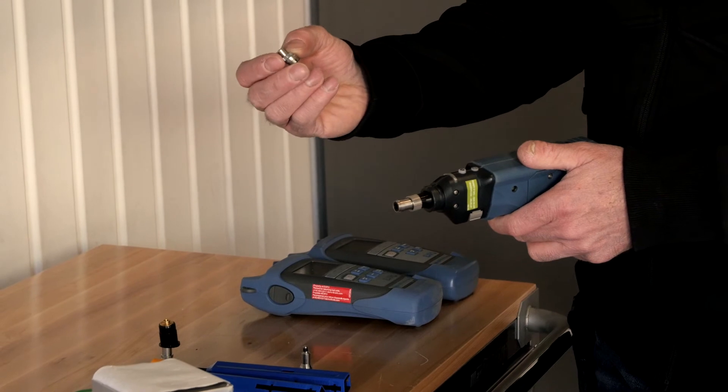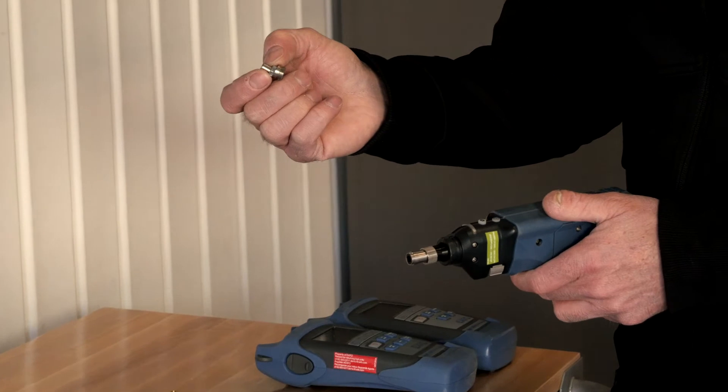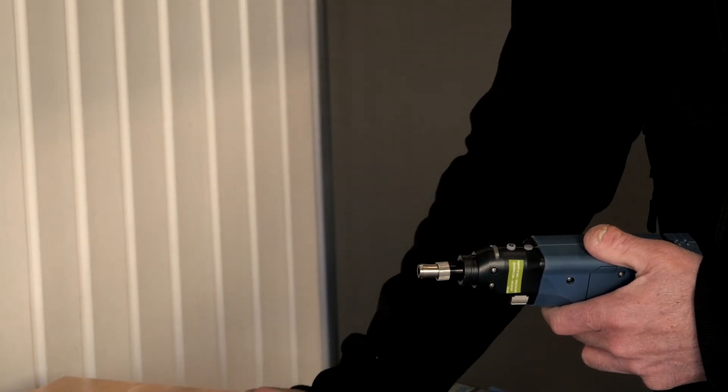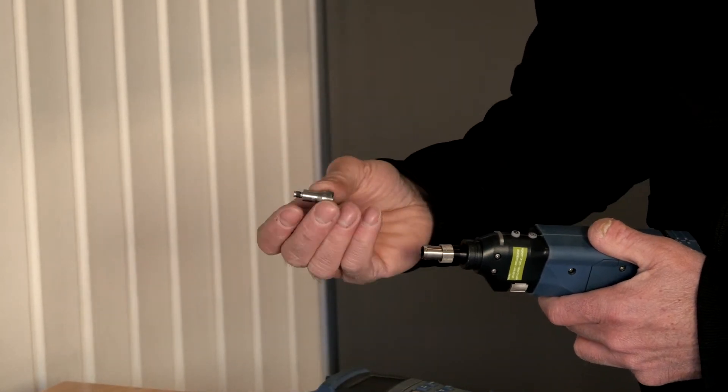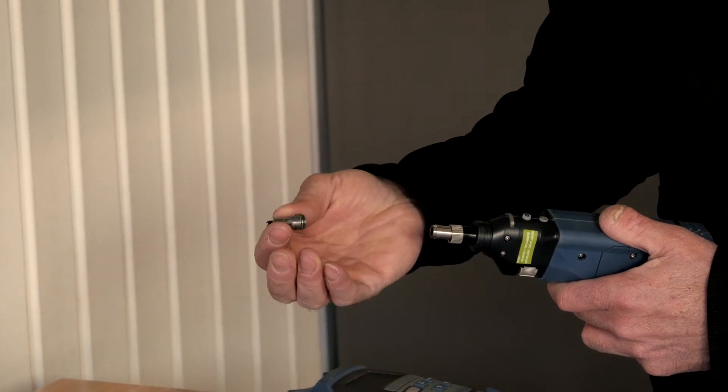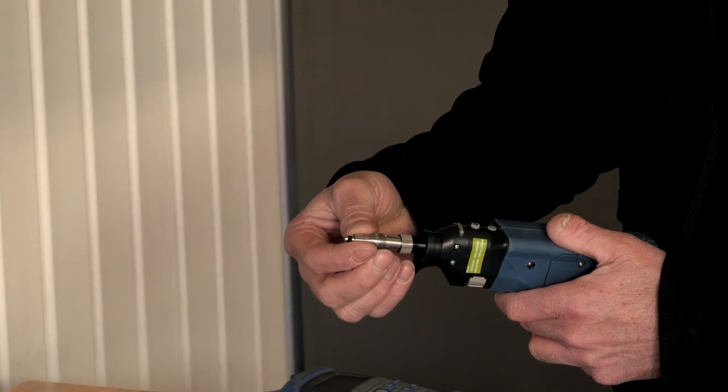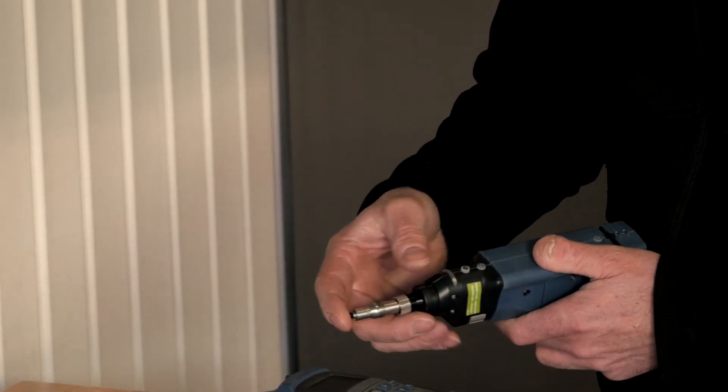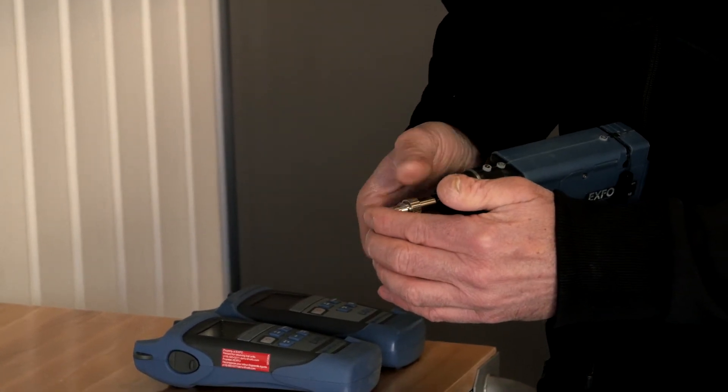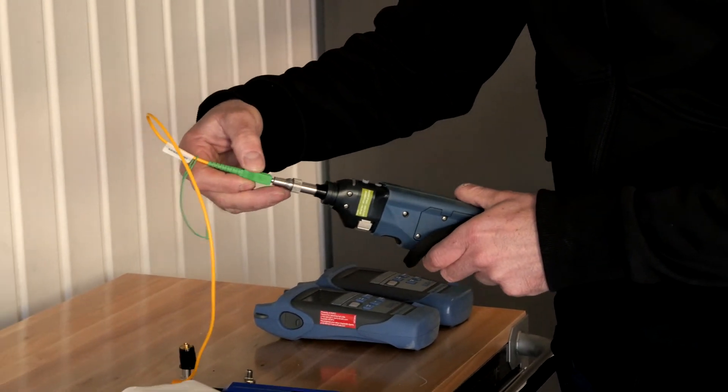We have SCAPC adapter tip. So this is actually a tip to inspect the coupler, so the female part of SCAPC connectors. And we also have the one for 2.5mm APC connectors. That's the one we use to inspect jumpers. Very simple to install on the probe. There's a key, you align the key, and then you simply screw on this adapter on the very end of the probe. Now I would be ready to inspect a jumper like this one here.